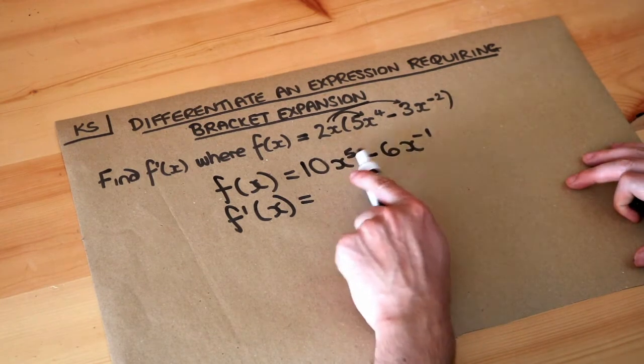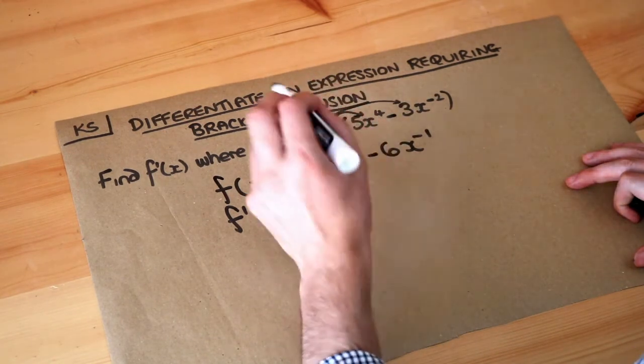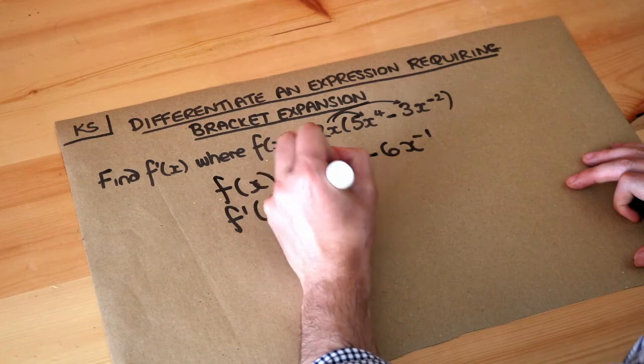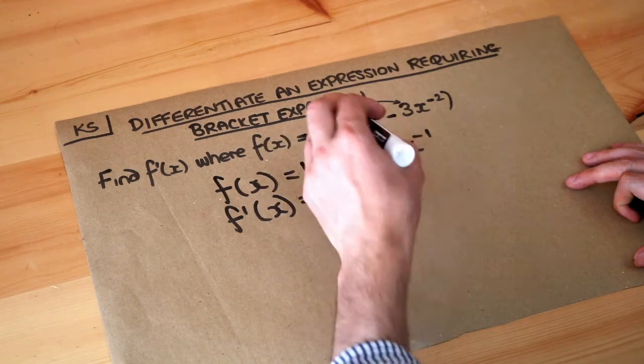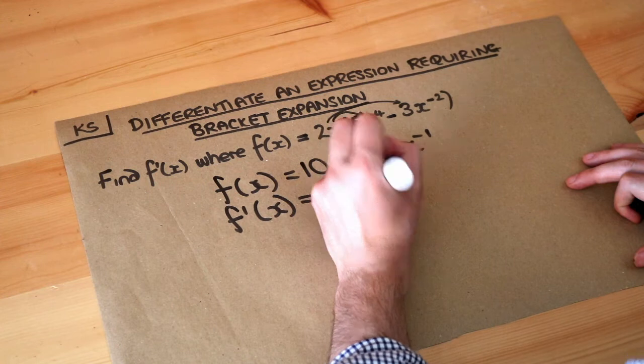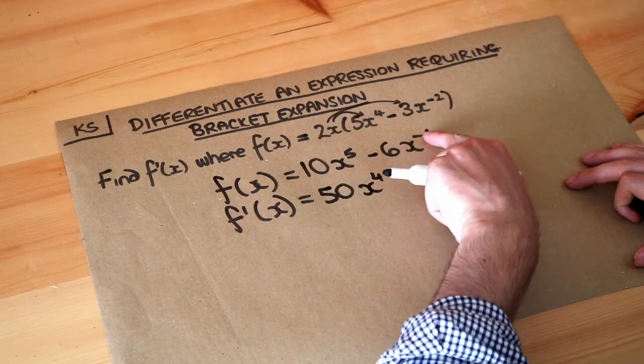So 10 times 5 is 50, and we reduce the power by 1, so x^5 becomes x^4. And then we do -6 times...